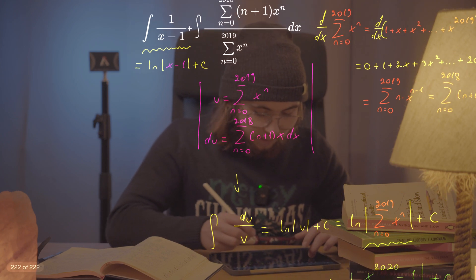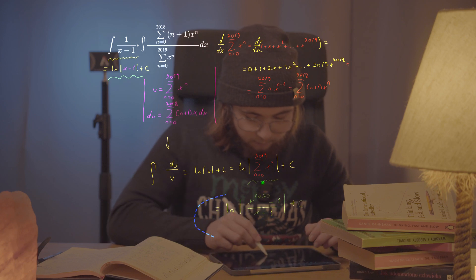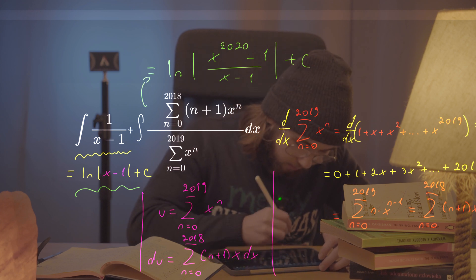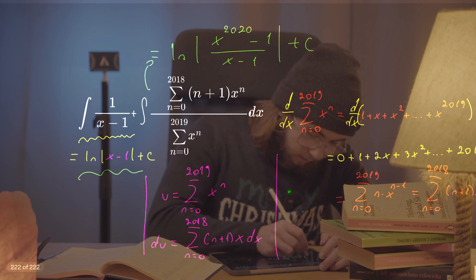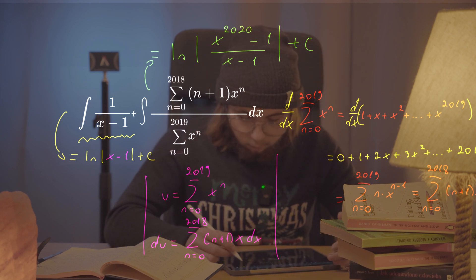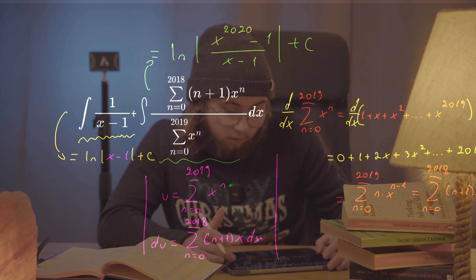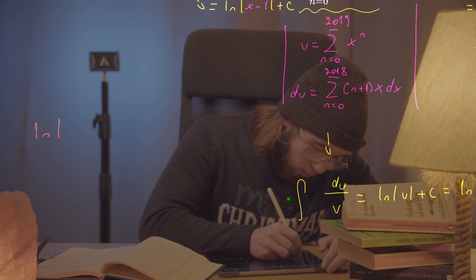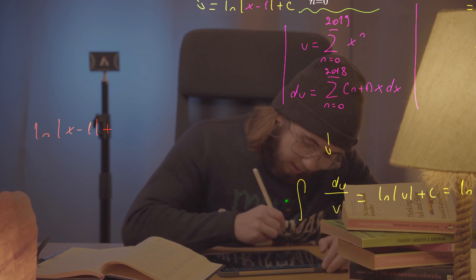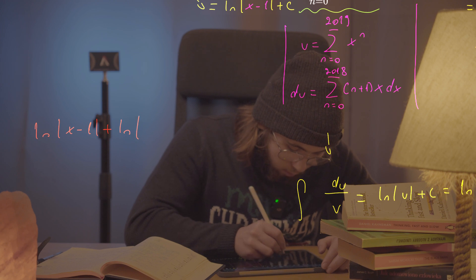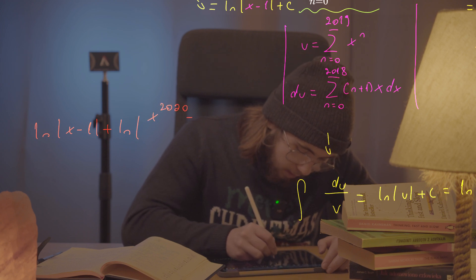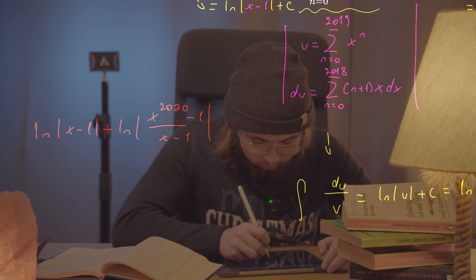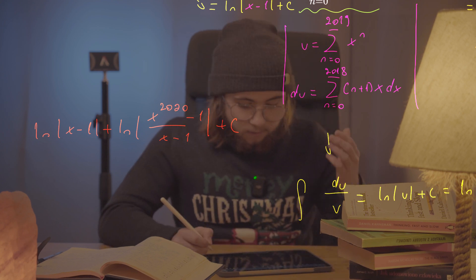Combining this result with the result from the first integral, we can now sum everything up. We get the natural log of the absolute value of x to the power of 2020 minus one, all over x minus one, plus a constant C.